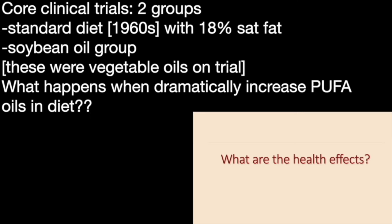In those clinical trials on saturated fats — what we call the core trials — in almost all of them, what they did is take a regular diet, which at the time was considered 18% saturated fat. The intervention group instead of regular milk got soy-filled milk, instead of regular cheese got soy-filled cheese, and got something like the Impossible Burger — so they had much higher content of vegetable oils. In effect, those trials can be seen as clinical trials of vegetable oils — what happens when you dramatically increase polyunsaturated fats in somebody's diet?